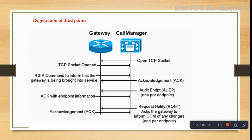After all the successful message exchanges — RSIP acknowledgment and Audit Endpoint acknowledgment — once the endpoint is registered, the Call Manager also sends an RQNT, or Request Notification. This asks the gateway to notify the Call Manager of any changes happening on that particular endpoint. The gateway acknowledges this, confirming it will report any changes on that endpoint.